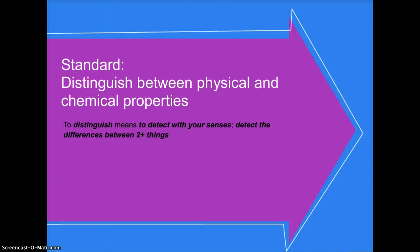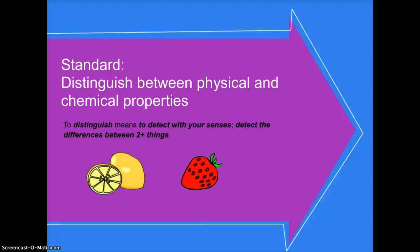So, our standard is to distinguish between physical and chemical properties, and when we look at the word distinguish, it means to use our senses to detect differences between two or more things. So, when you see the lemon and strawberry here, how would you distinguish between the two? What are some things that make them different?